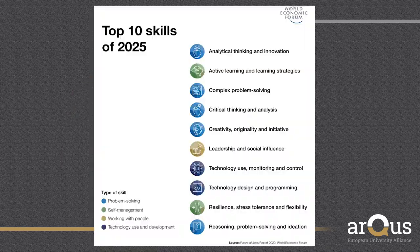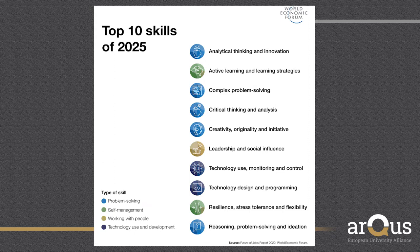One possible source to define the transversal competences could be the top 10 skills of 2025 defined by the World Economic Forum. They group these competences in four main categories: problem solving, self-management, working with people, and technology use and development.